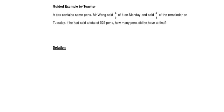A box contains some pants. Mr. Wong sold 1 third of it on Monday and sold 3 eighths of the remainder on Tuesday. If he had a total of 525 pants, how many pants did he have at first?